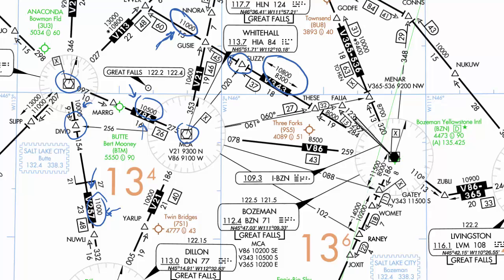Next we're going to talk about the MOCA, or Minimum Obstruction Clearance Altitude. MOCAs are depicted on en route low altitude charts nearly the same way as an MEA, only with a little asterisk in front. So here on this route there's an MEA of 13,000 feet and a MOCA of 10,800 feet; over to the northeast there's an MEA of 10,000 feet and a MOCA of 9,400 feet. If you need to know the minimum altitude you can fly between two fixes, just look for the asterisk.